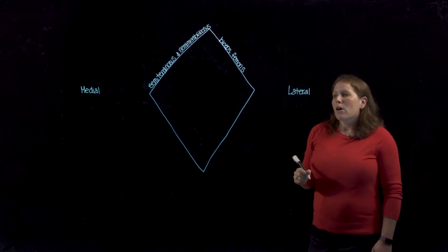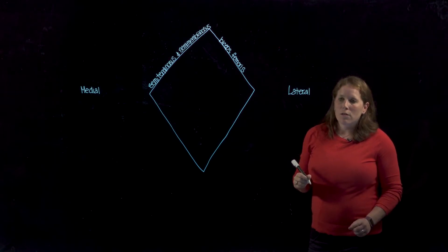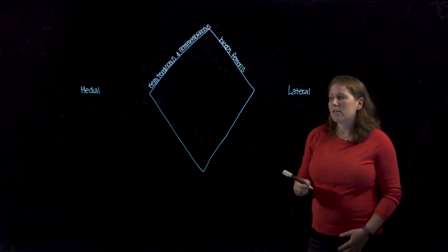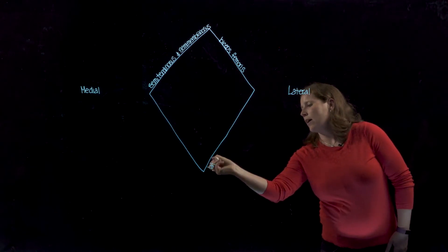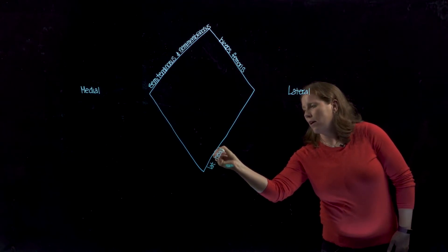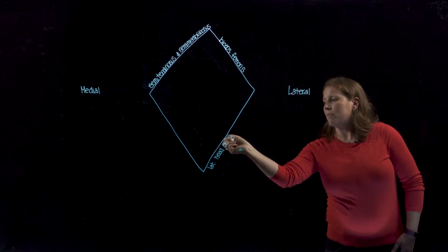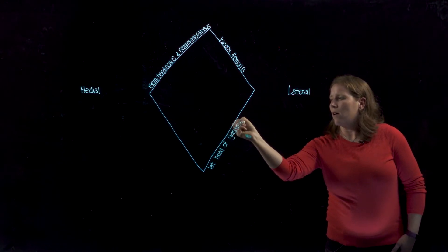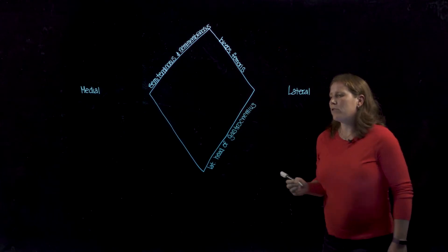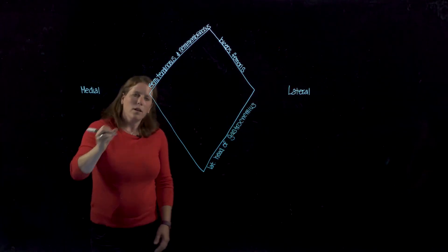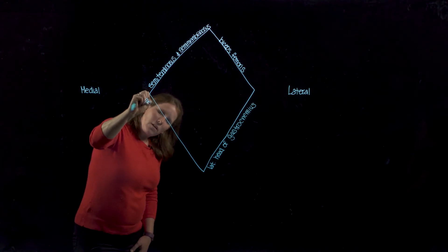The inferior borders are formed by one single muscle that has two heads, and this is gastrocnemius. So we'll mark the lateral head of gastrocnemius there on the lateral side, and on the medial side do the same.